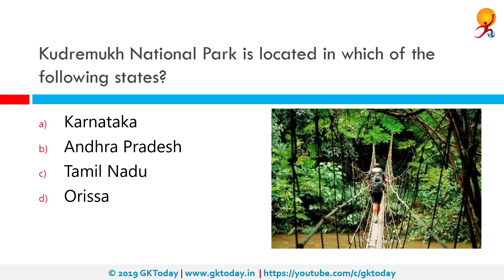Kudremukh National Park is located in which of the following states? The correct answer is Karnataka. Kudremukh is a mountain range and the name of a peak located in Chikmagalur district in Karnataka, India. It is also the name of a small hill station and mining town situated near the mountain, about 48 kilometers from Karkala and around 20 kilometers from Kalasa.